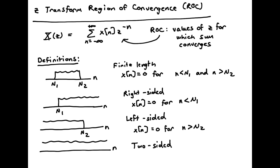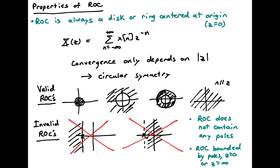Now we're going to consider some properties of the region of convergence. The ROC is always going to be a disk or a ring centered at the origin, because convergence of this summation only depends on the absolute value of Z. So you end up with this circular symmetry in the complex Z-plane.